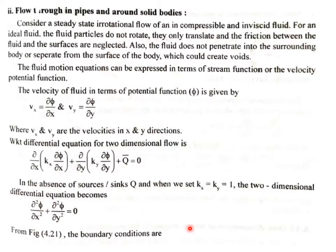Next is the differential equation for flow through pipes and around solid bodies. We consider a steady-state irrotational flow of an incompressible and inviscid fluid — an ideal fluid. The fluid particles do not rotate; they only translate, and friction between the fluid and surfaces is neglected. The fluid does not penetrate into surrounding bodies or separate from the body surface, which could create voids.